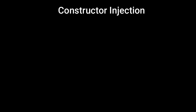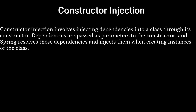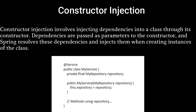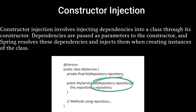Constructor Injection involves injecting dependencies into a class through its constructor. Dependencies are passed as parameters to the constructor, and Spring resolves these dependencies and injects them when creating instances of the class.